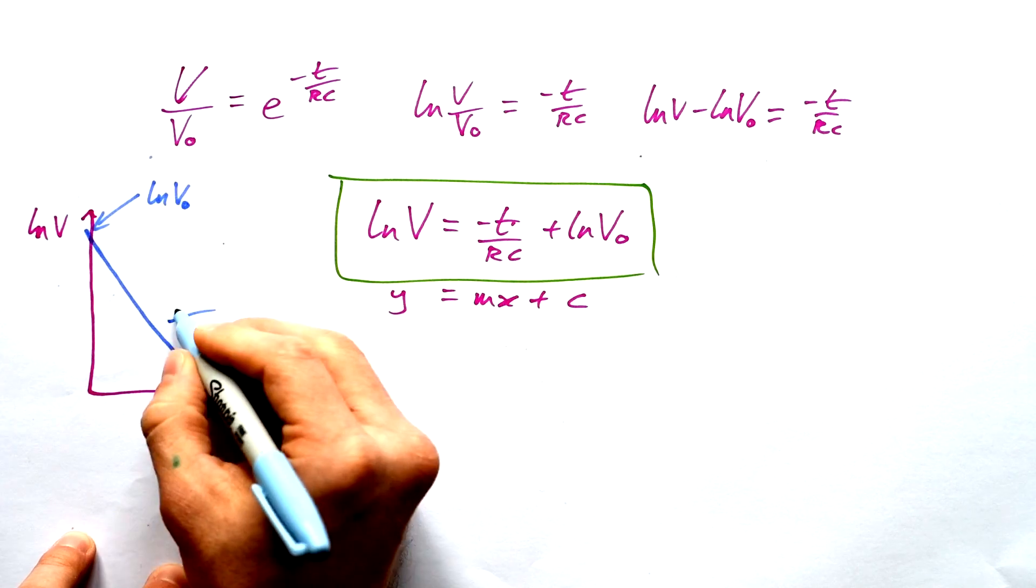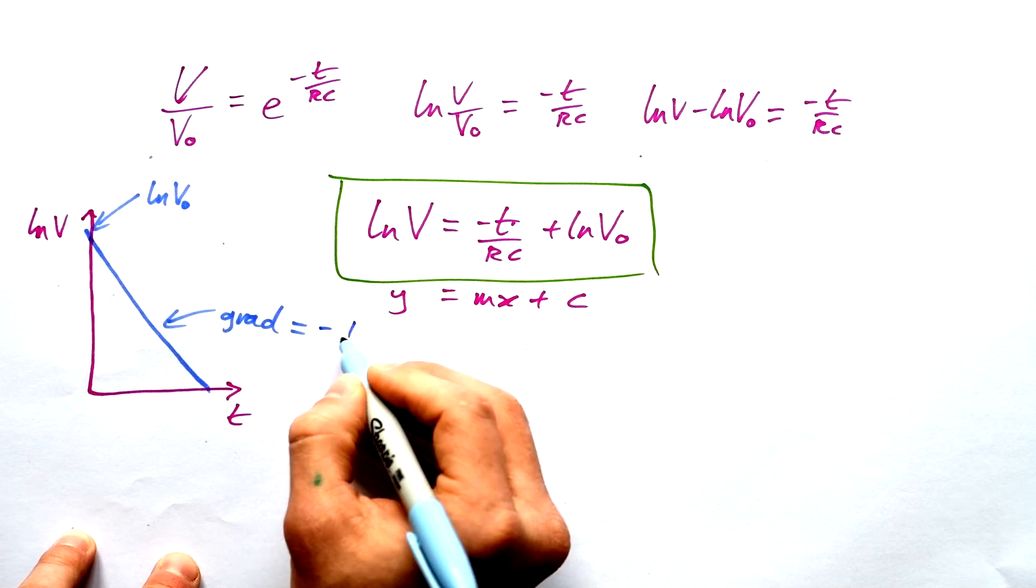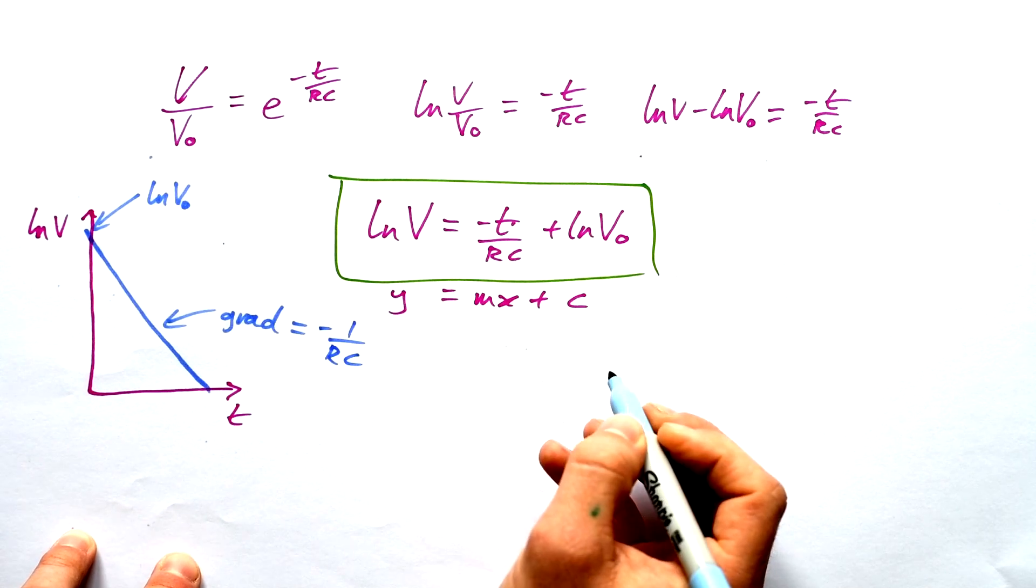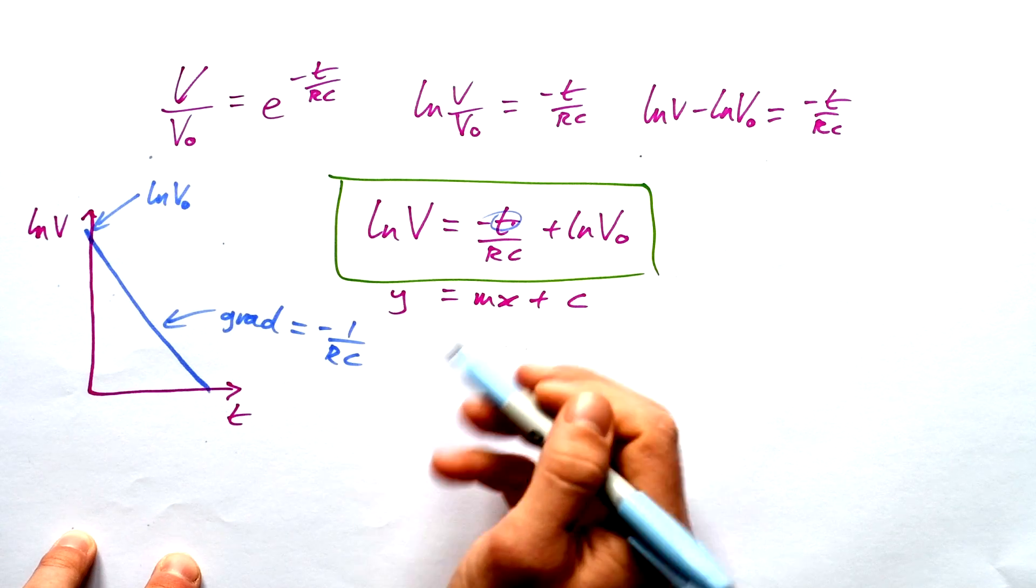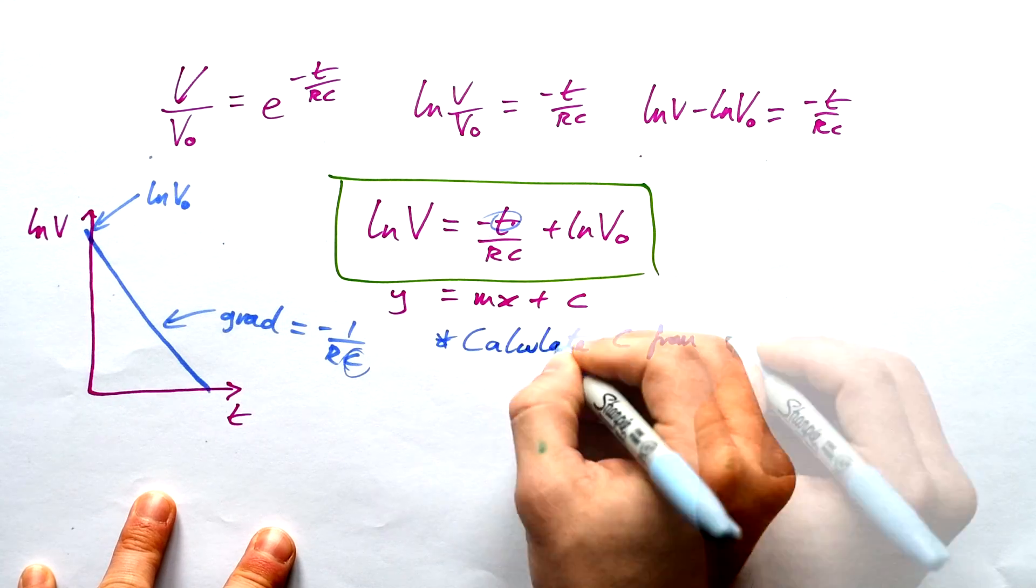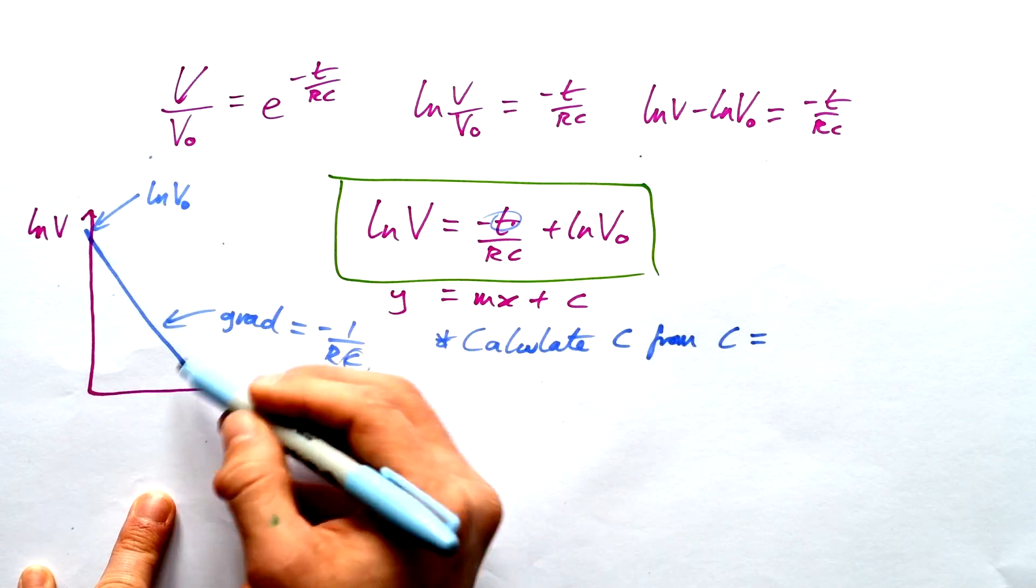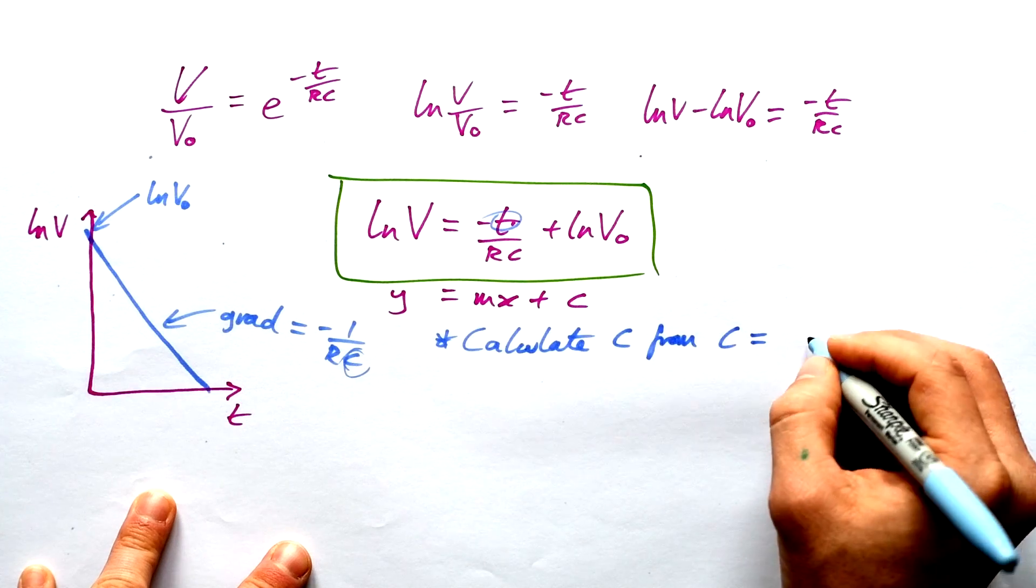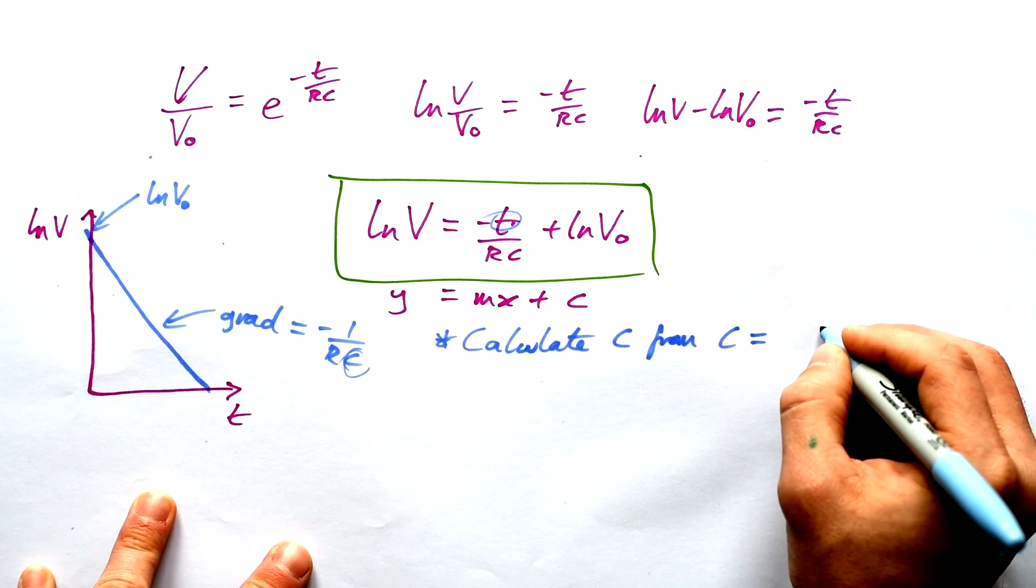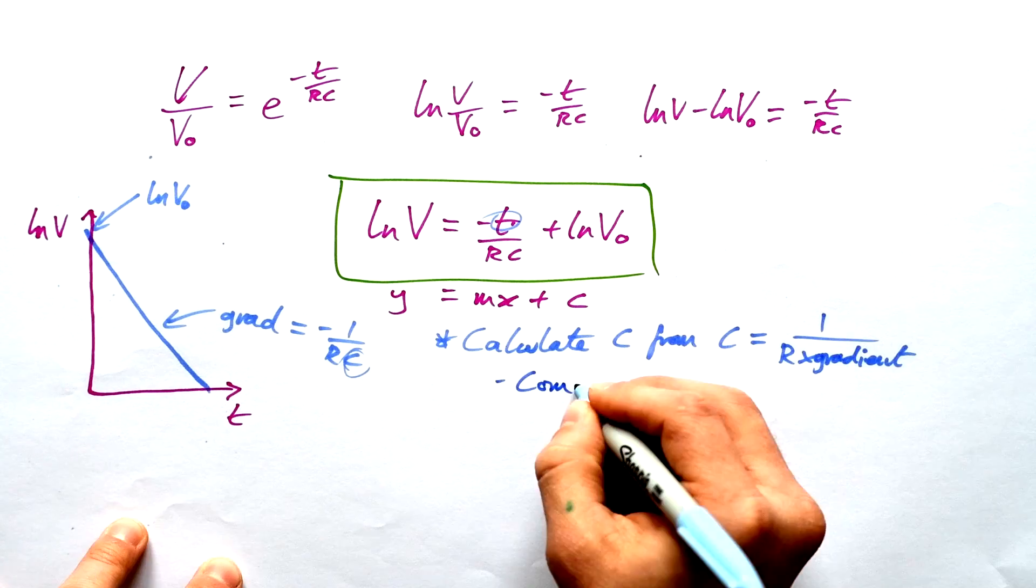And so what's the gradient of this line going to be? Well, we can see that we're left over with minus 1 over RC if T is on the x-axis. So then you can calculate the capacitance from the gradient. So just swapping these two around. C is going to be equal to, well, our gradient is going to be minus, so it doesn't actually matter too much. We can just get rid of the minus. It's going to be 1 over the resistance times the gradient.